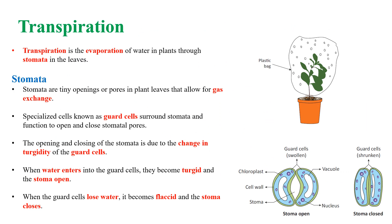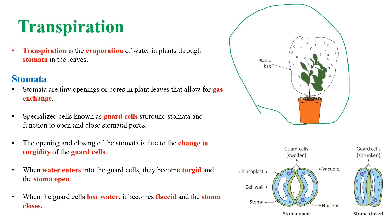Next is transpiration. Transpiration is the evaporation of water in plants through stomata present in the leaves. Transpiration can be demonstrated by covering a plant with a plastic bag, and after a few days you can see tiny water droplets in the plastic bag, which is due to transpiration.